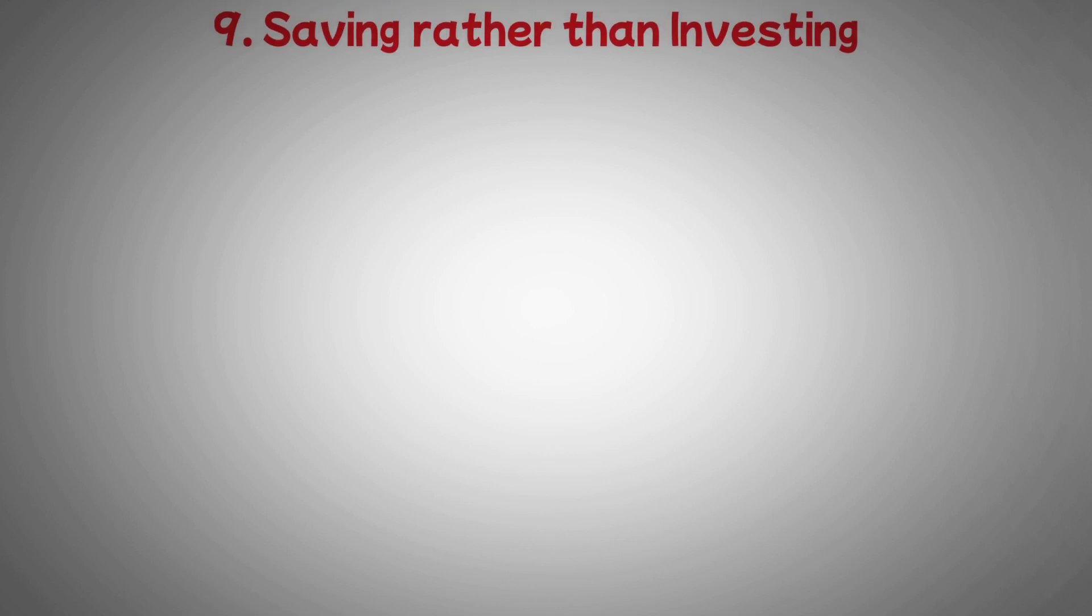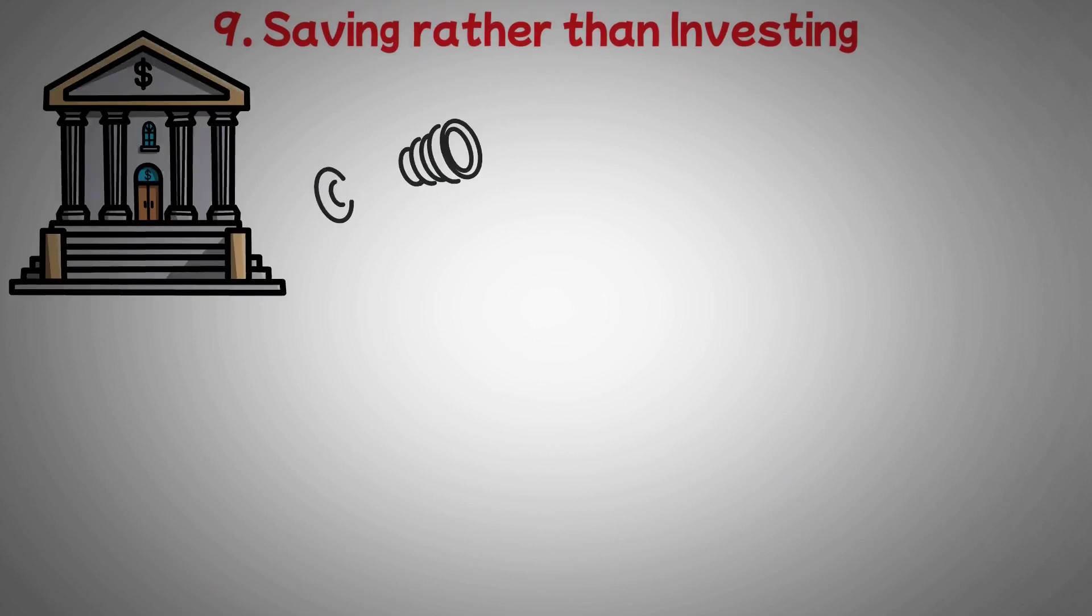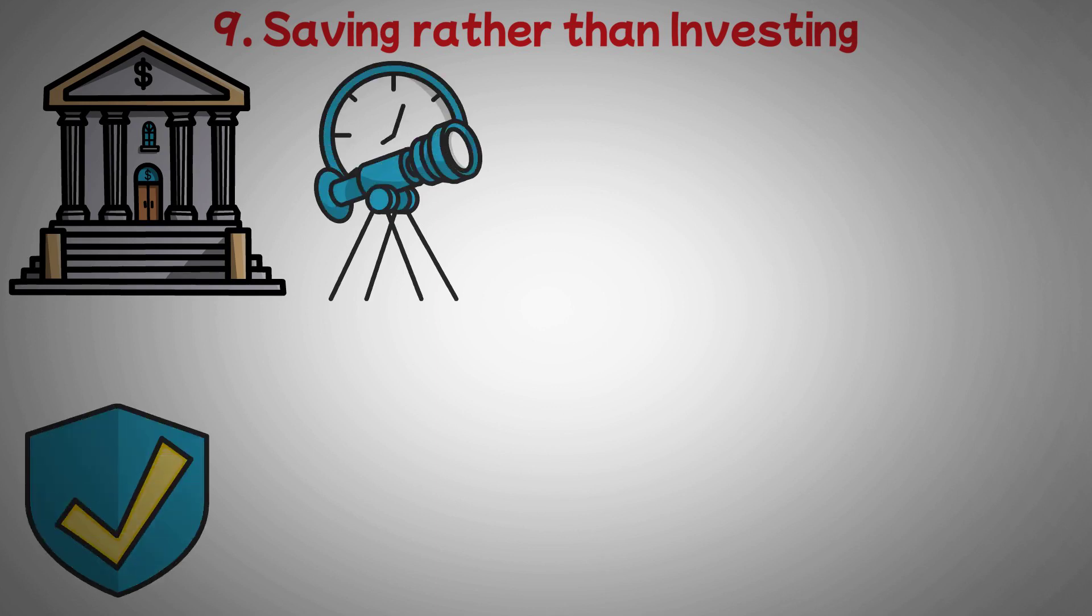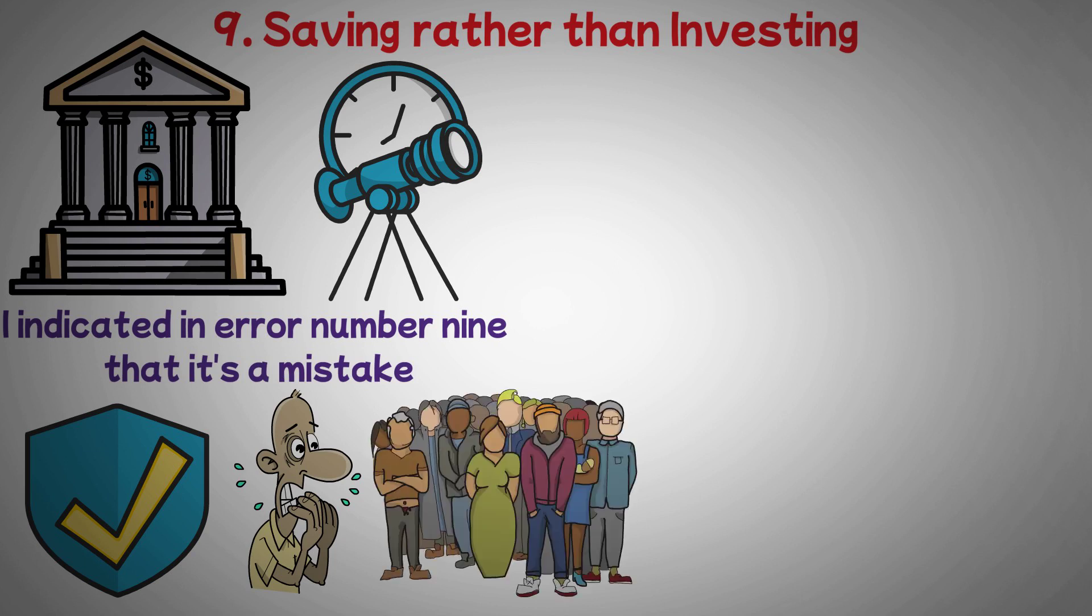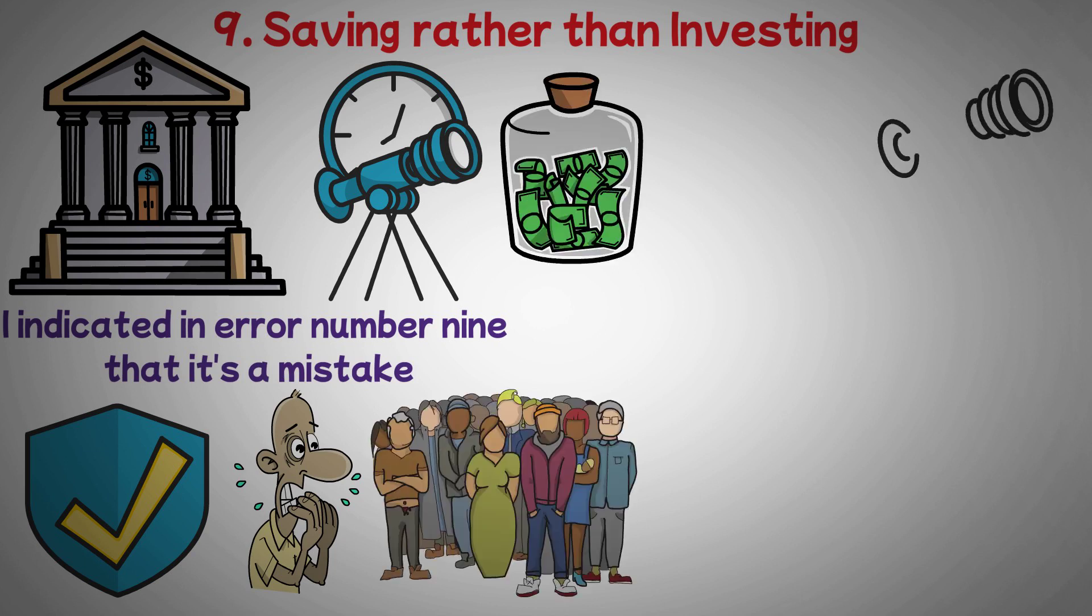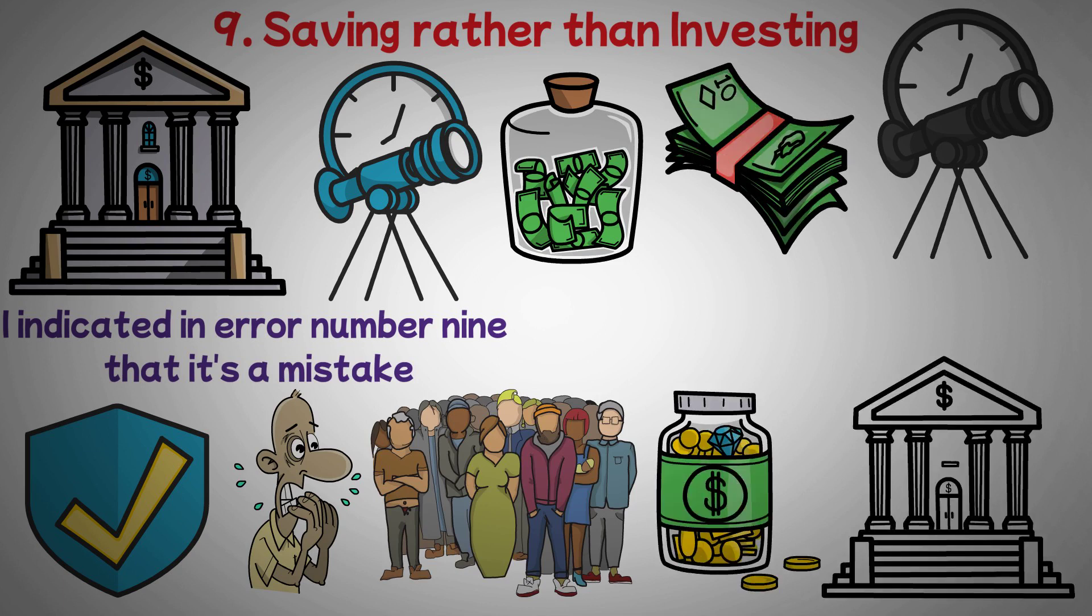Nine: saving rather than investing. Money that is kept in a bank depreciates over time as a result of inflation. However, money expands when it is correctly invested. It's that easy. I indicated in error number eight that it's a mistake to be afraid to take financial risks. People who are afraid to take chances will save all of their money, allowing it to depreciate over time. Only enough money to cover your living needs and a cash emergency fund should be kept in a savings account. In other words, you shouldn't just save for the sake of saving.